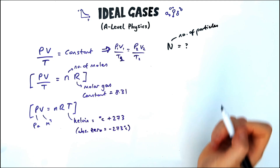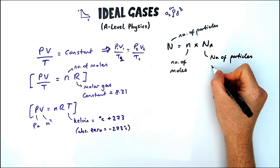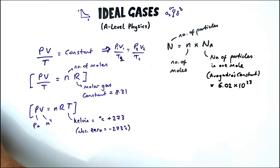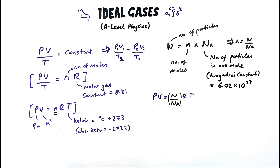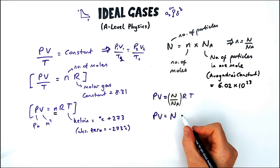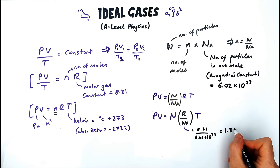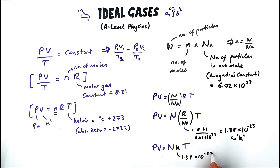To find the overall number of particles N in a sample of gas, you need the number of moles and how many particles are in one mole — Avogadro's constant, which is 6.02 × 10²³. Rearranging: the number of moles equals the number of particles divided by Avogadro's number. Substituting into the ideal gas equation, we get two constants: R divided by Nₐ, which is 8.31 divided by 6.02 × 10²³, equals 1.38 × 10⁻²³. This constant is known as Boltzmann's constant, symbol K, and it's on your equation sheet.